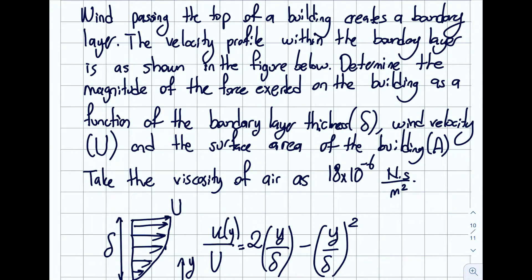Let's read the question statement. Wind passing the top of a building creates a boundary layer. The velocity profile within the boundary layer is as shown in the figure below. Determine the magnitude of the force exerted on the building as a function of the boundary layer thickness delta, wind velocity U, and the surface area of the building A.